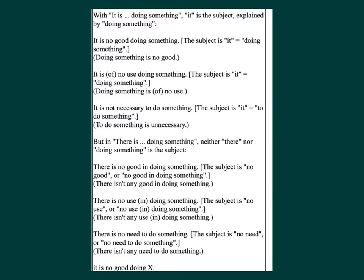With 'It is doing something,' 'it' is the subject, explained by 'doing something.' So 'It is no good doing something' — the subject is 'it,' equivalent to 'doing something is no good.' 'It is of no use doing something' — equivalent to 'doing something is of no use.' 'It is not necessary to do something' — equivalent to 'to do something is unnecessary.'